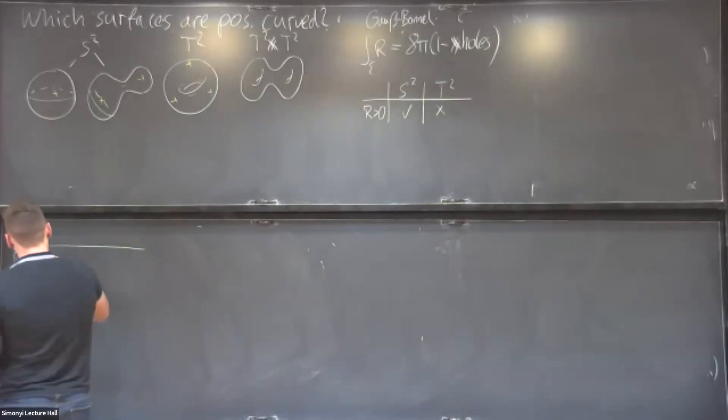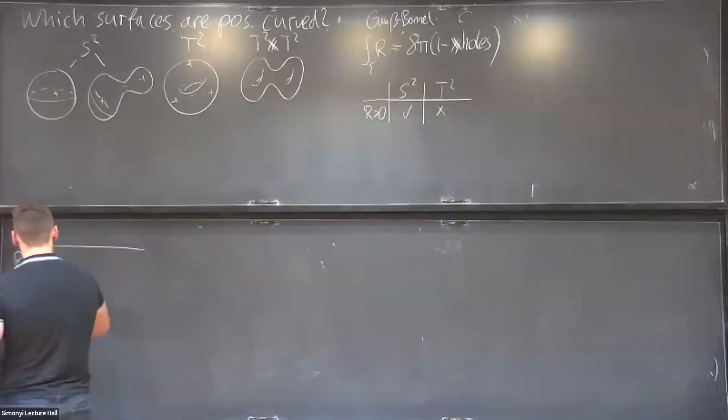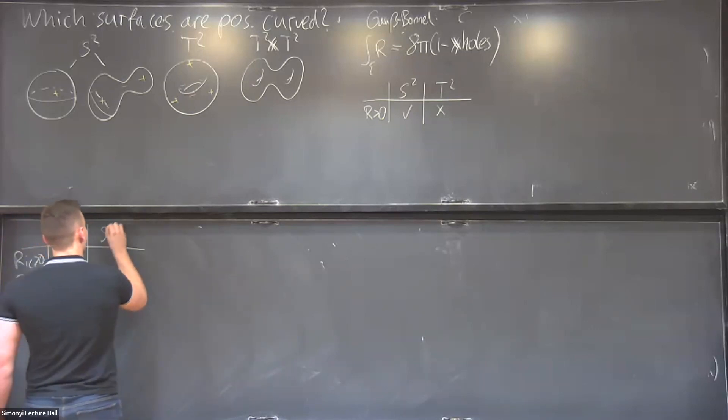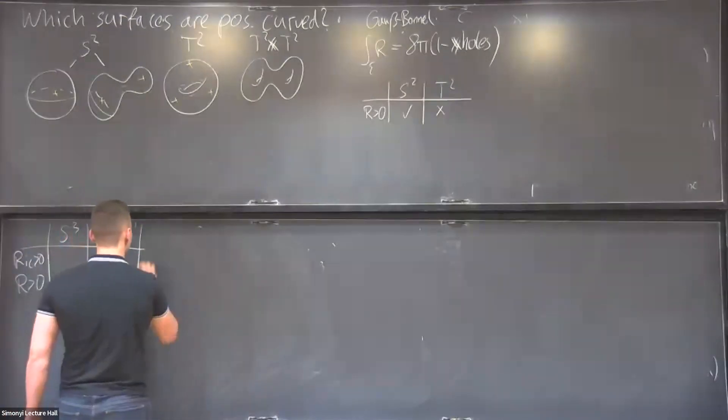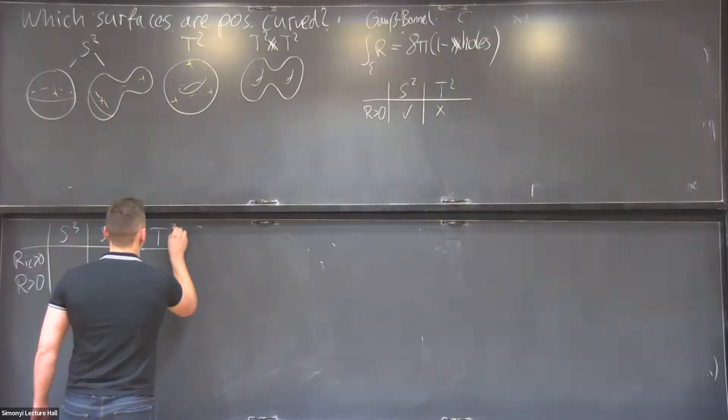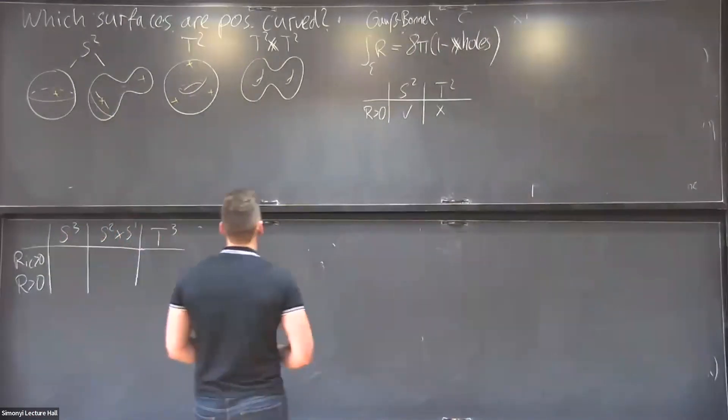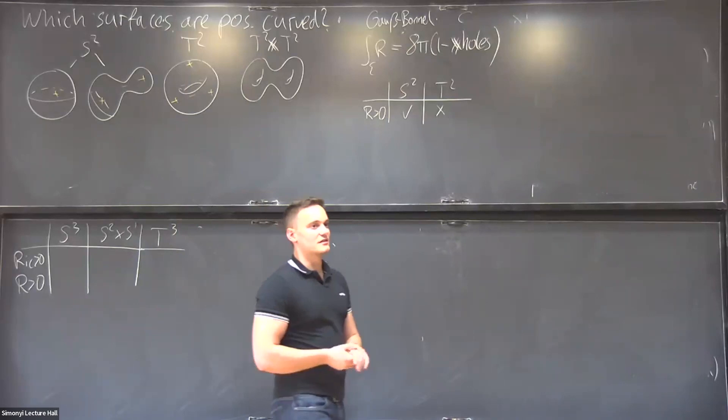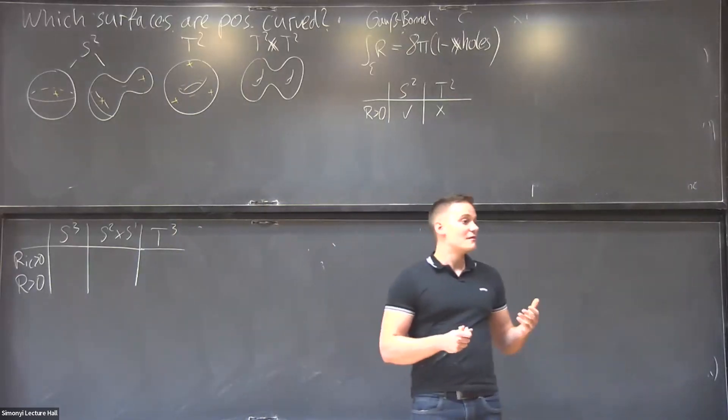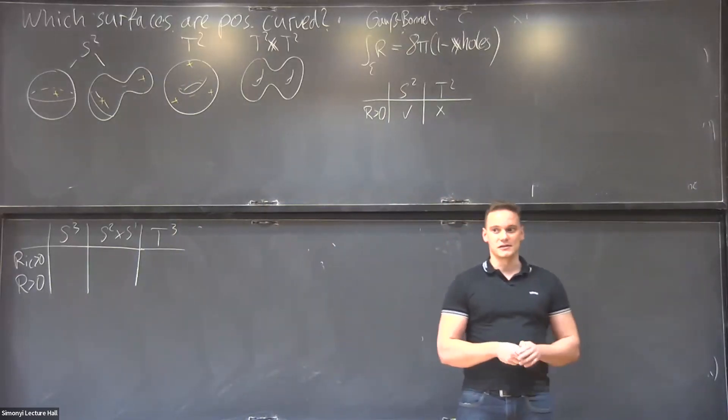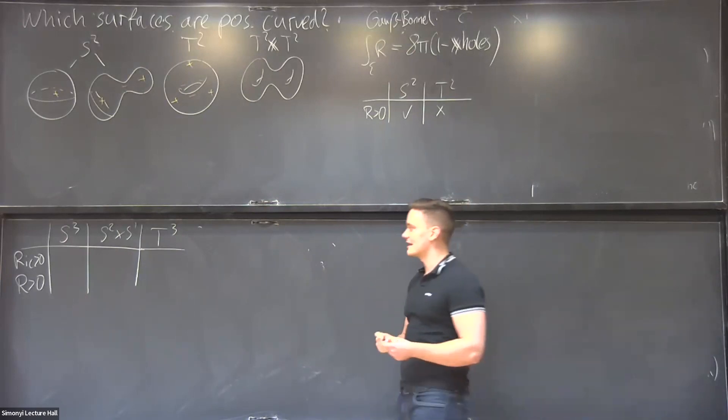So let's say, what about Ricci? Positive Ricci, positive scalar curvature. And now let's take S³, S² × S¹, and again, the torus T³. And now the Gauss-Bonnet theorem is just a two dimensional result. So we need some analog to address this higher dimensional case.